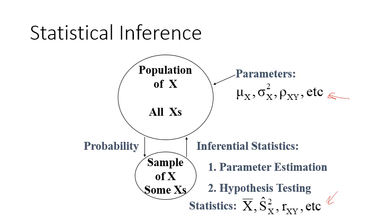Typically we can't collect data on everyone in the population, but we're interested in what the population acts like and behaves like. So what we do is draw a sample and from that we make inferences about the population. How do we make those inferences? This is what we did in section two — that is probability. We use probability to say that our sample is, based on how much probability we're looking at, likely to be representative of the population.